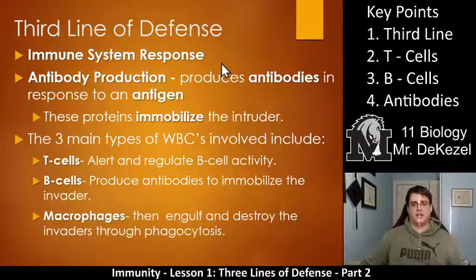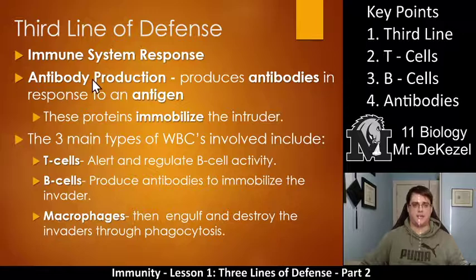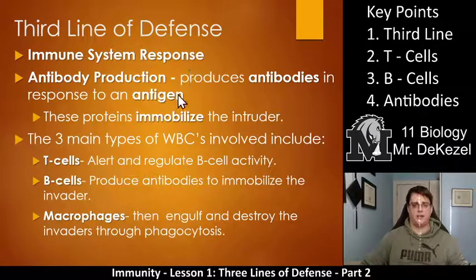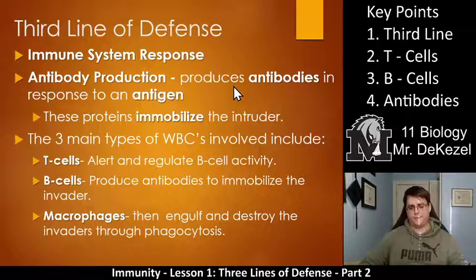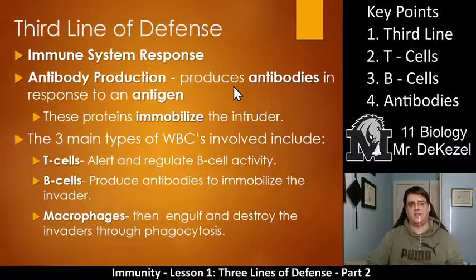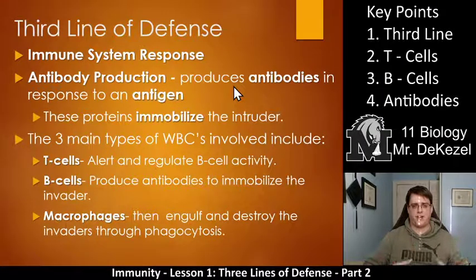The end goal of the immune system response is to produce antibodies — antibody production — so that we can respond to an antigen. Antibody production produces antibodies in response to an antigen. Antibodies detect antigens. In this case, we're going to be talking about them in terms of detecting a foreign invader antigen instead of an antigen on a blood cell.